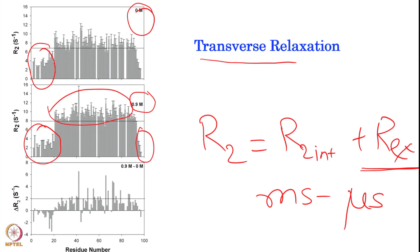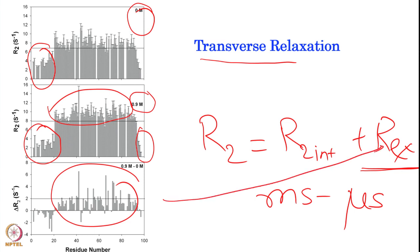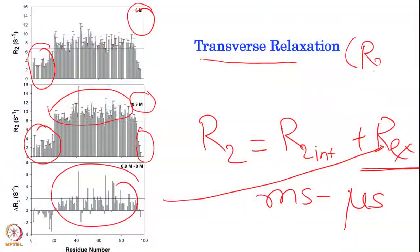Those residues showing higher R2 are already going into some kind of conformational exchange. By doing this simple experiment of recording R2 at two different urea concentrations, we learn a lot about the exchange contribution. R2 is a good experiment to measure the exchange contribution, as well as how protein folding and stabilization happens. Many things can be investigated using the transverse relaxation rate R2.